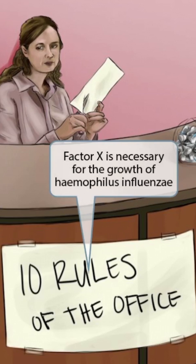Finally, notice that we've added a sign on our desk that says 10 rules of the office. Some people in this office space are pretty OCD, so they like to hang up signs about specific rules and regulations. The 10 rules sign is here to help you remember that factor X is also required for the growth of H-flu. Factor X is also known as hematin, so 10 rules sign for factor X.